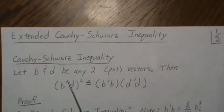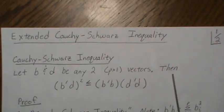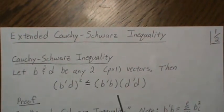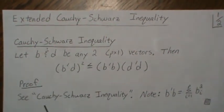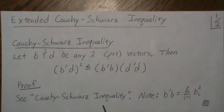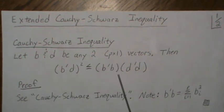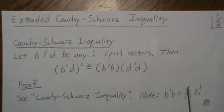So let B and D be any two P by 1 vectors, then this relationship holds. And this is the Cauchy-Schwarz inequality. Now I have a video called Cauchy-Schwarz inequality that proves this, and so we won't go there. But one note in the video,